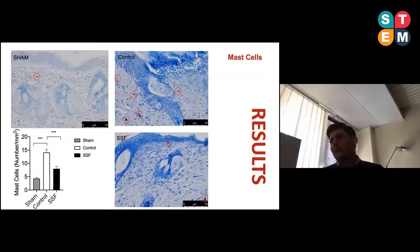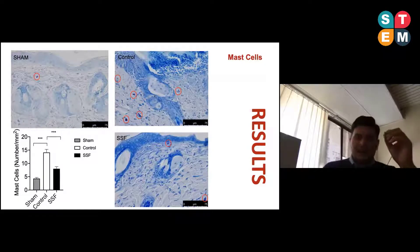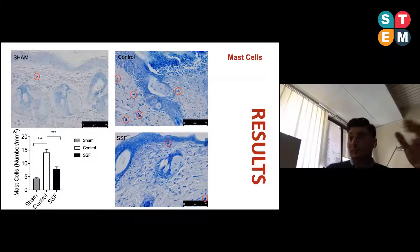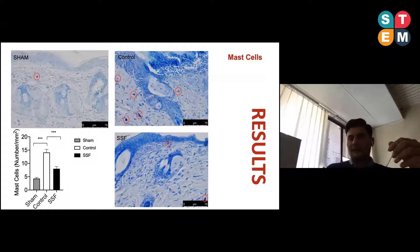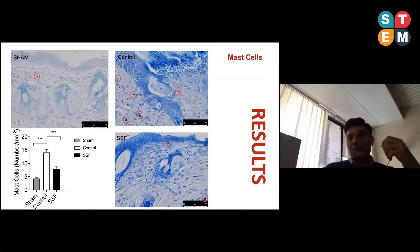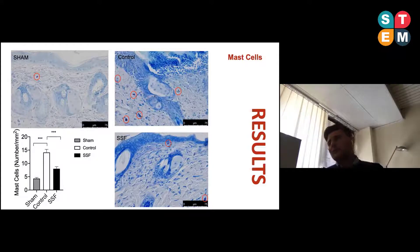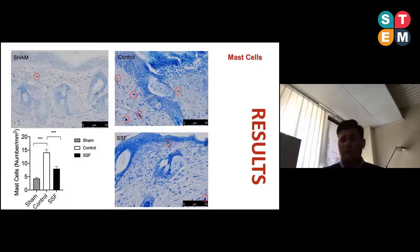Last but not least, we analyzed the presence of mast cells. Mast cells are a very important immune cell that play a key role in wound management and wound healing, as they are responsible for the release of inflammatory factors such as cytokines, chemokines, and histamine. They also play a key role in complications of wound healing, especially in large animals. In this case, we can see that the mast cell number was lower in the skin of mice treated with snail secretion filtrate compared to the control.